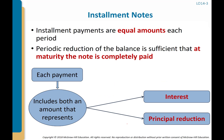Installment notes require us to separate each payment between interest and principal reduction. As principal is paid down each period, the carrying amount decreases, so the next period's interest portion is lower and the principal reduction portion is higher.